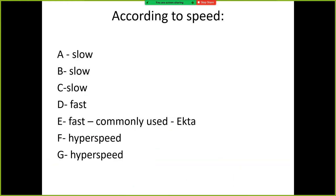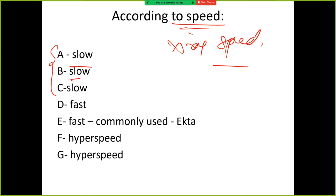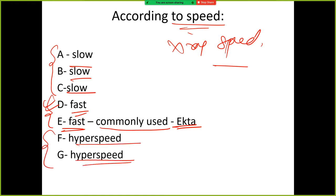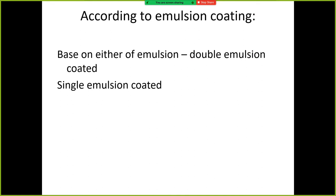Then according to speed — we can also divide x-ray films according to speed. A, B, C are slow speed. D and E are fast speed. E is commonly used — it is also known as Ekta film. And F or G is hyper speed, which has a very high speed. So: A, B, C = slow; D, E = fast; F, G = hyper speed.